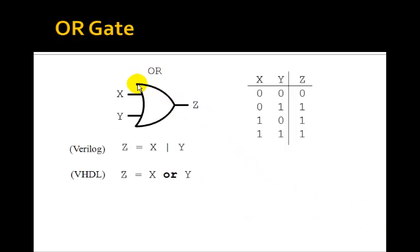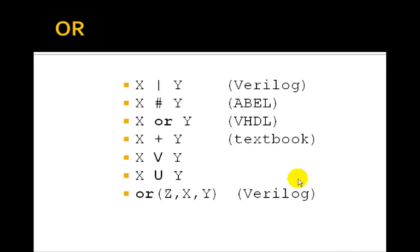Here's an OR gate. Notice the symbol for an OR gate has this curved input and sort of comes to a point. Again, there are two inputs X and Y. The output of an OR gate is 1 if either or both inputs are 1. We use the vertical bar symbol for the OR operator in Verilog. Whereas in VHDL, you have to write out the word OR. Here are some other symbols for OR: ABLE uses this pound sign, textbooks sometimes use a plus sign — OR is like a logical addition — and this V or U symbol is sometimes used. And Verilog has a function OR with output Z and inputs X and Y.